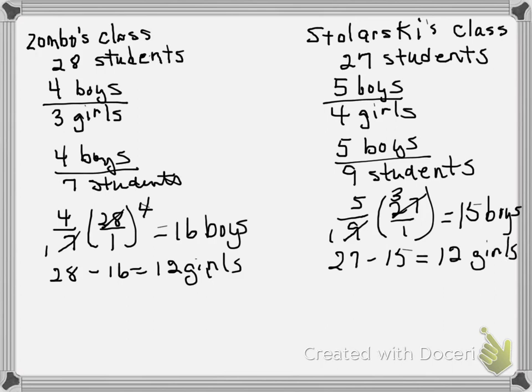Now let's look at the ratio of boys to girls if we combine them. So combine your boys: you have 16 plus 15 boys to 12 plus 12 girls.